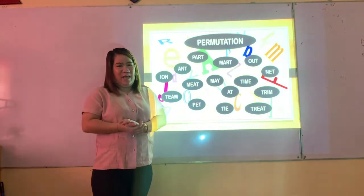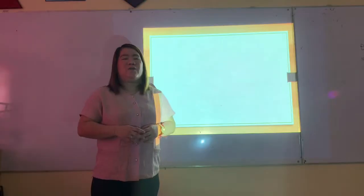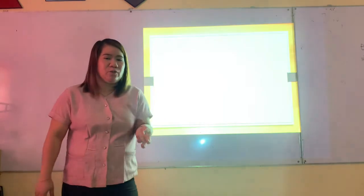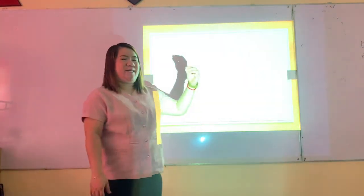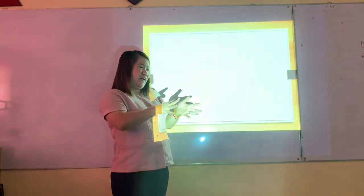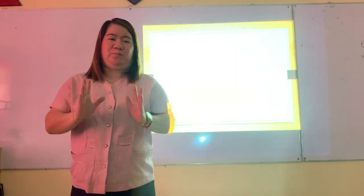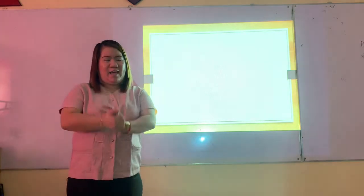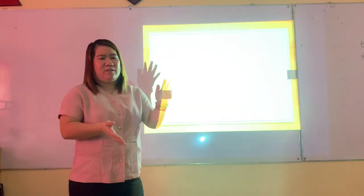But only groups two and three got the longest word, which is 'permutation.' Let's give them a round of applause. Group one got 4 words, group two got 20 words, group three got 15 words, group four got 12 words, and group five got 13 words. So the winner is group two — you will get plus 10 points on your quiz. Let's give them a round of applause.